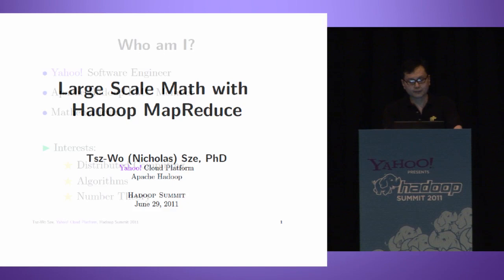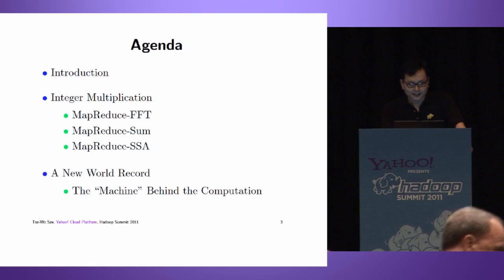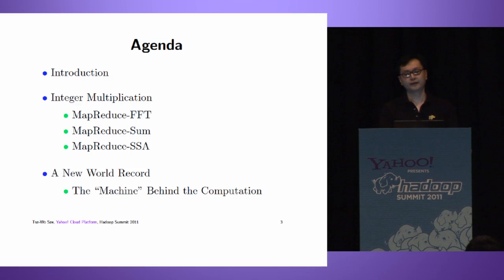My name is Jiwo Si. I'm a software engineer at Yahoo, moving to Hortonworks, and a member of the Apache Hadoop PMC. I'm also a mathematician interested in distributed computing algorithms and number theory. Here's the agenda: I'll first give an introduction, then talk about integer multiplication using MapReduce, and then discuss a new record and the machine behind the computation.